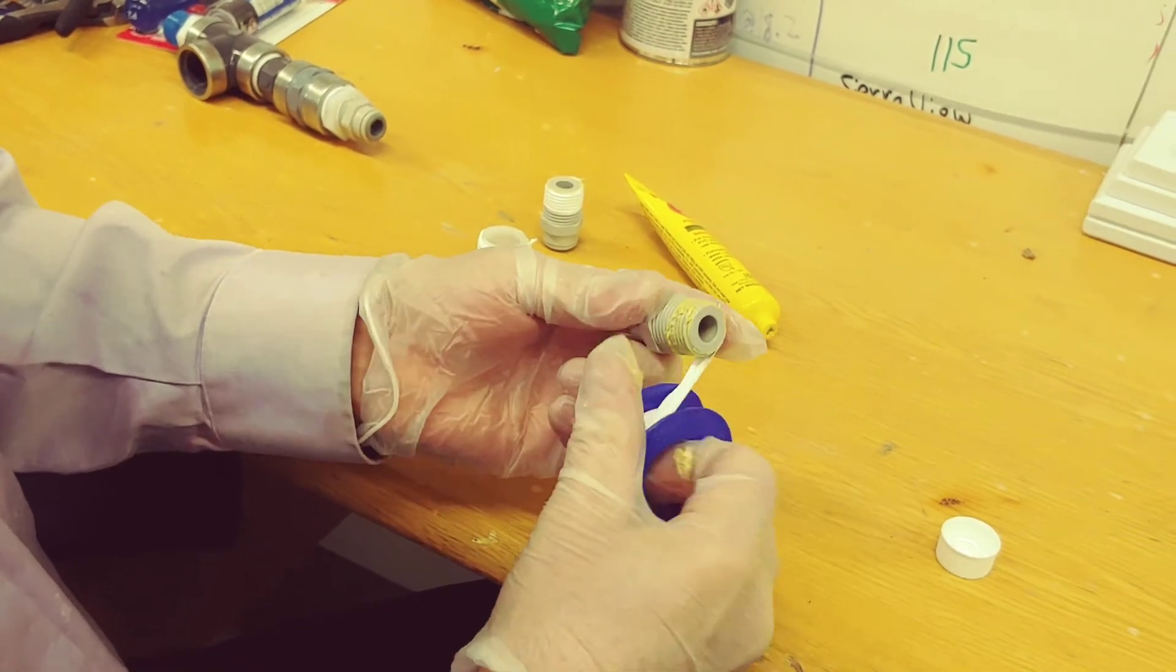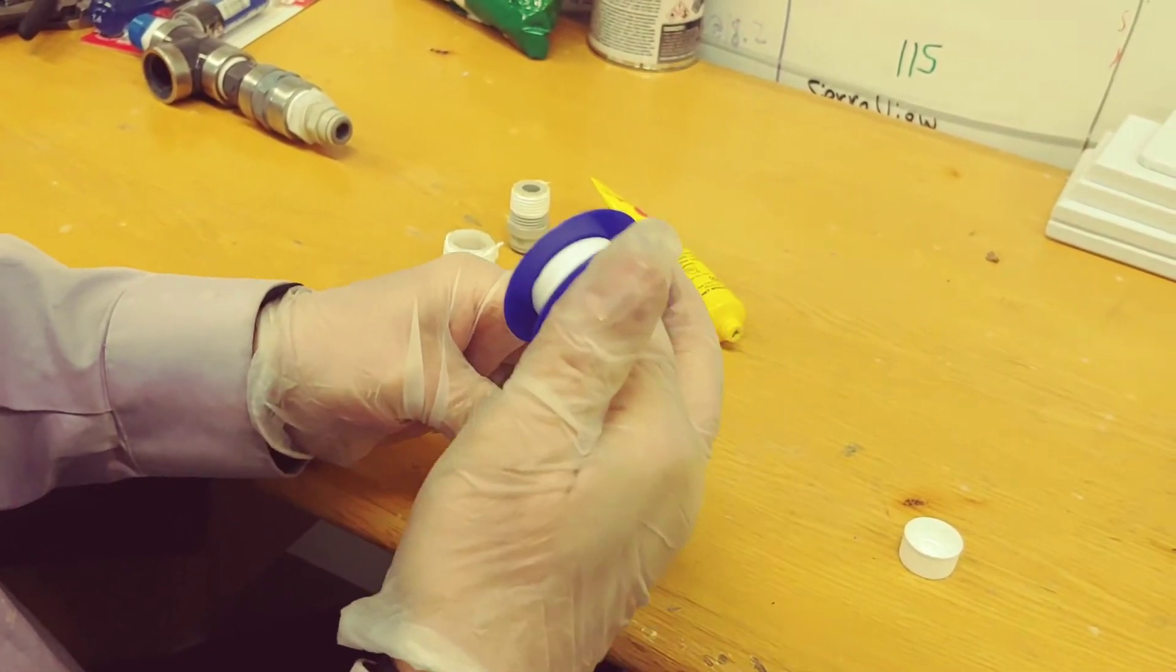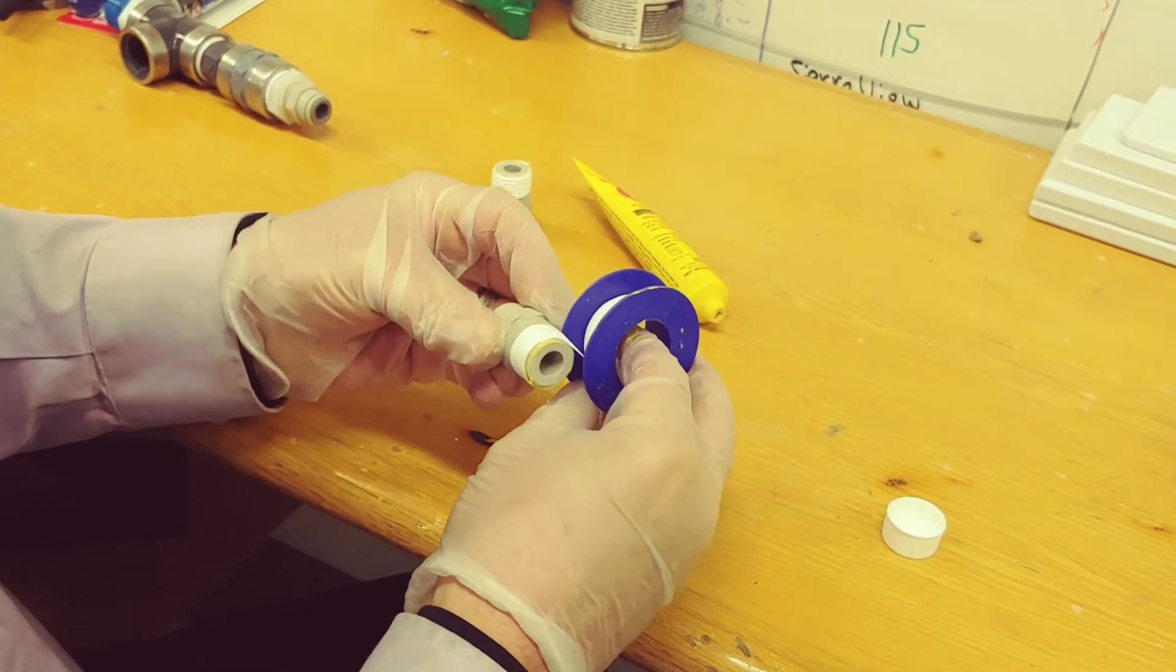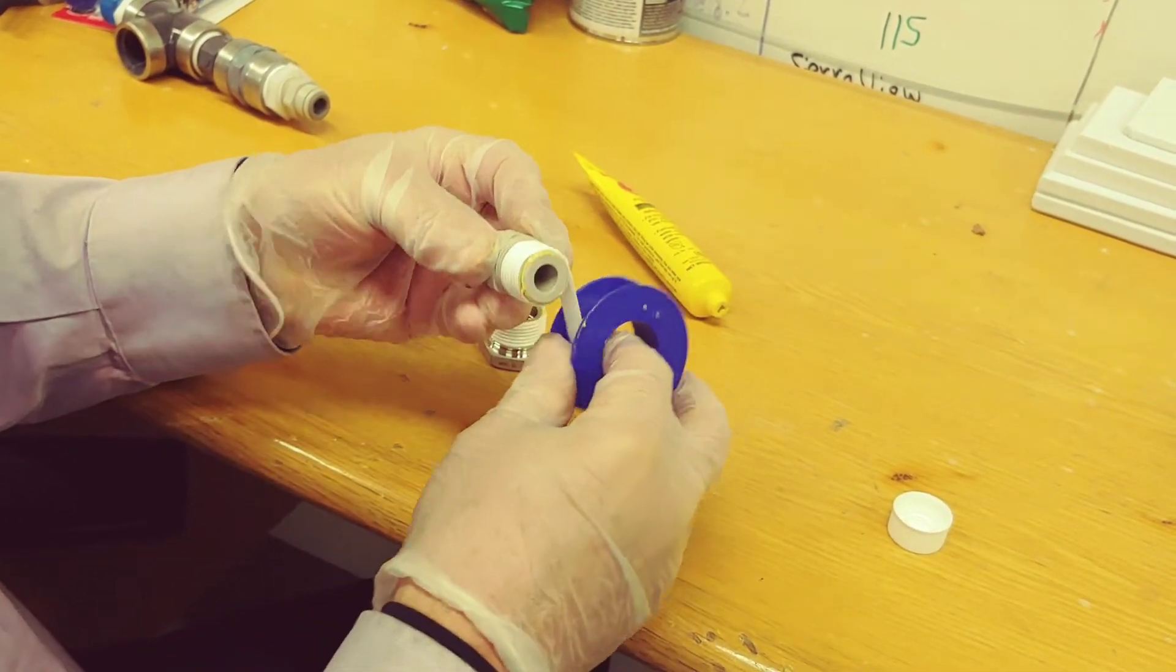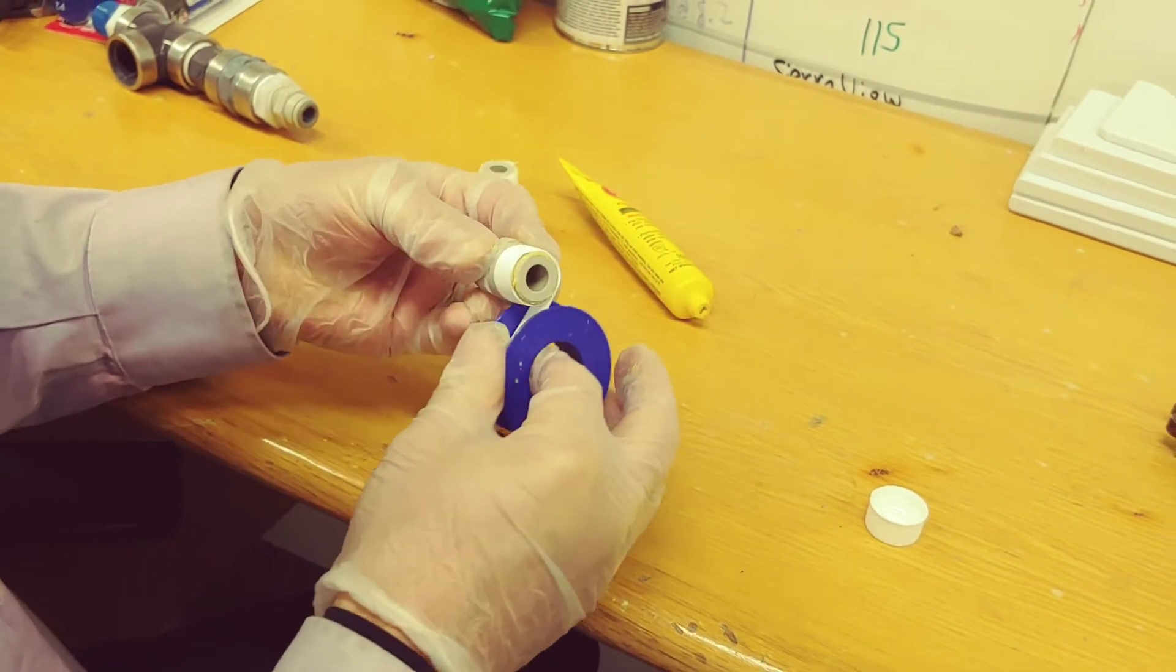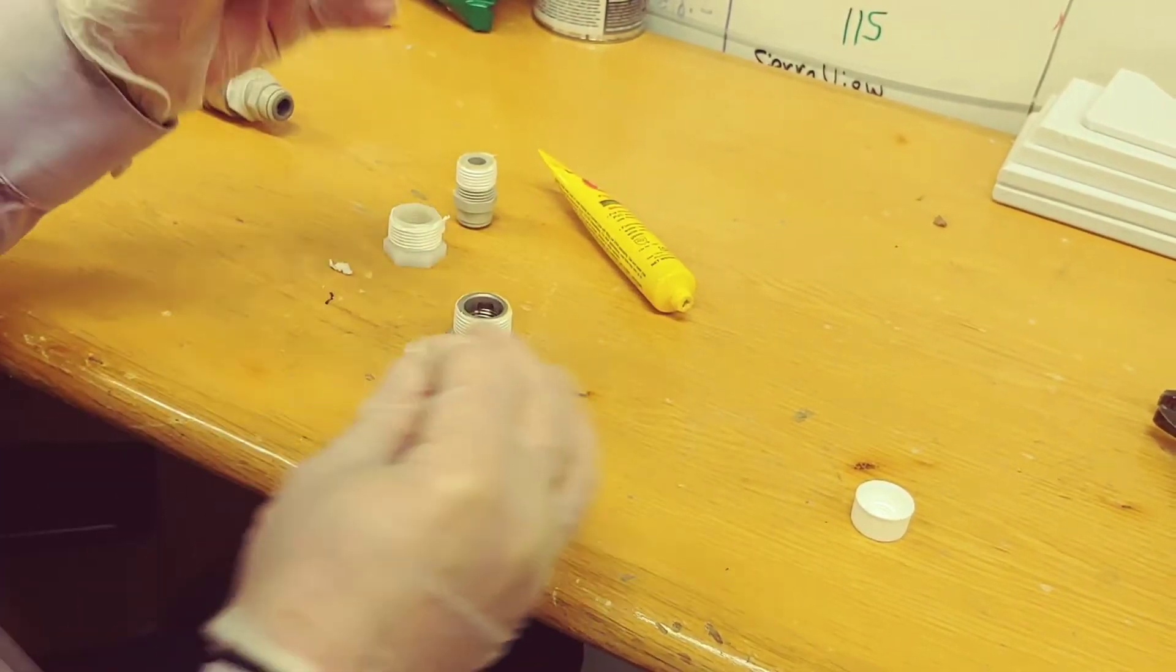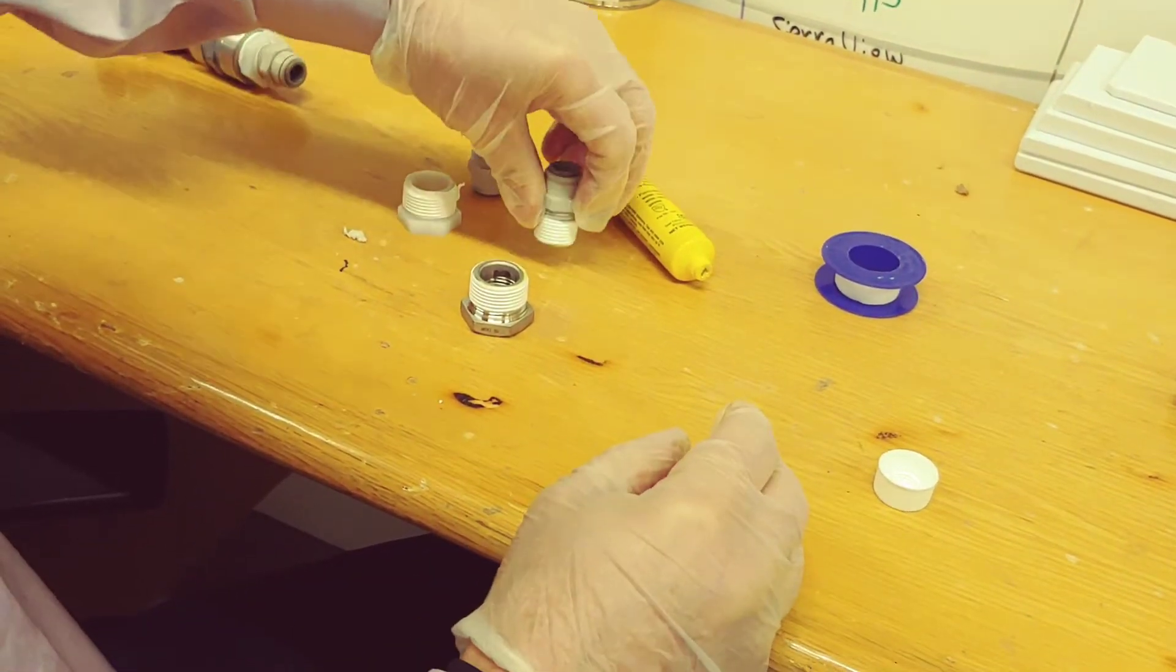And like I say, you only need the action part of the fitting. If you're tightening these all the way in, it's either a bad fitting or you're tightening them too tight. And a little bit of paste and two to three wraps is all you need.